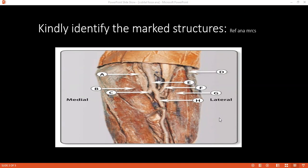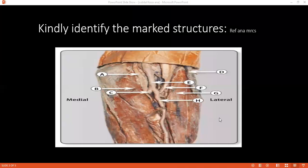Biceps is root value? Biceps is C5, C6. And supinator, both are C5, C6. And triceps is C7. Okay.